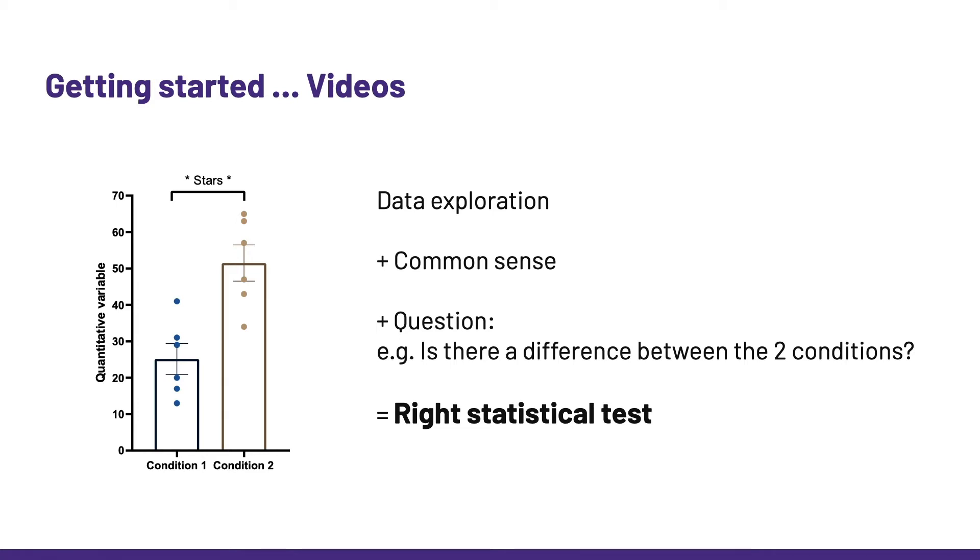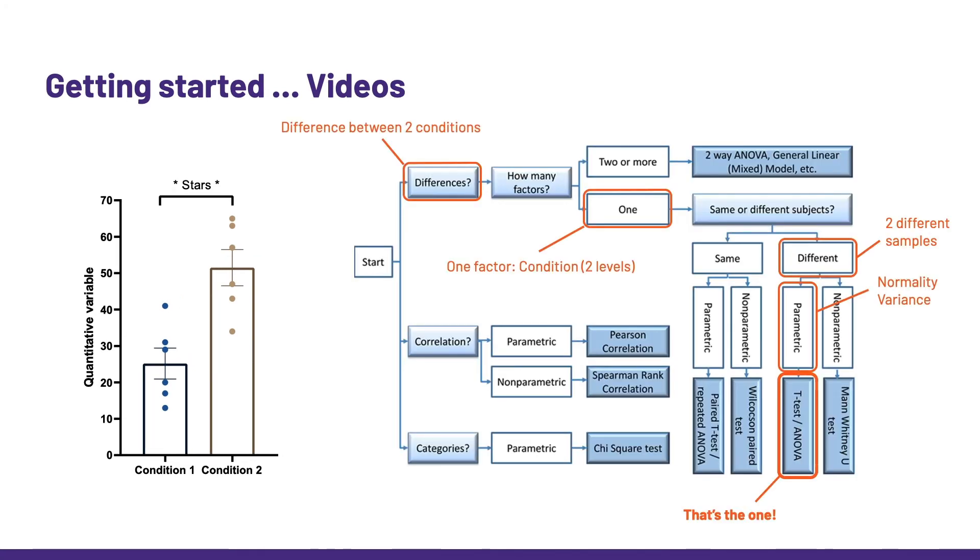To some extent, it does not matter if we know the name of the test. What really matters is that we know what we want the test to do. Finding the name of the test is easy. We can use a decision tree like this one, for example, but the real job is to know what we want the test to do.